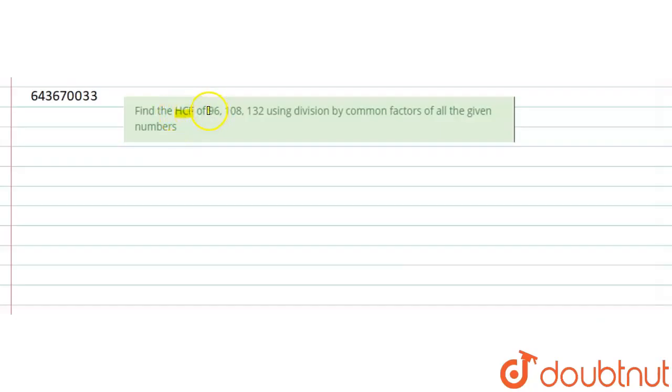Find the HCF of 96, 108, and 132 using the division method by common factors of all the given numbers.